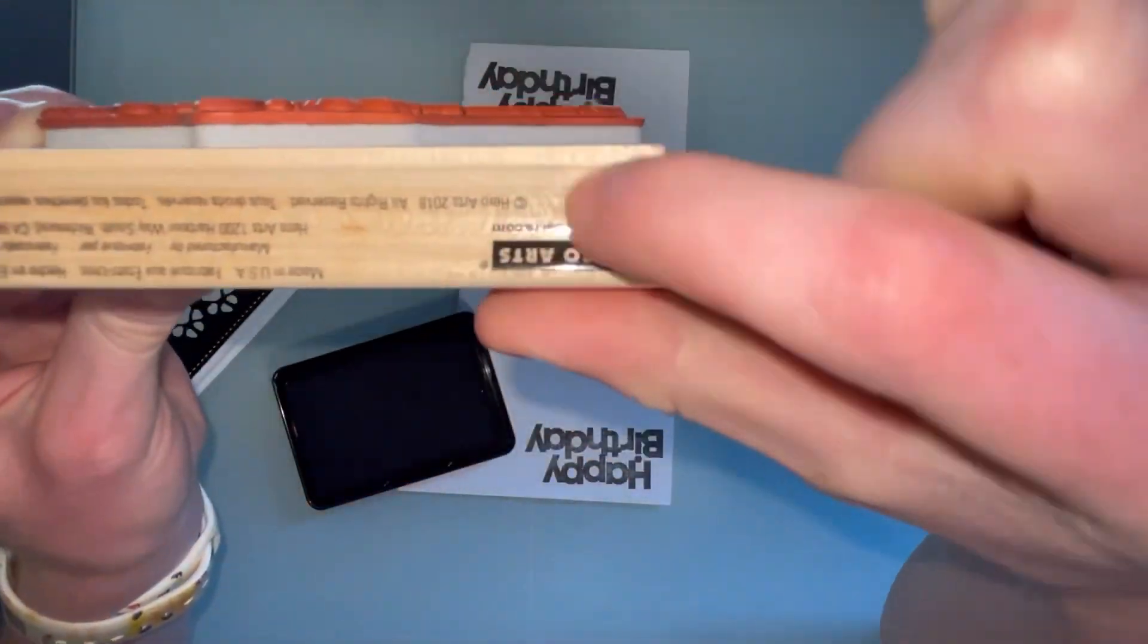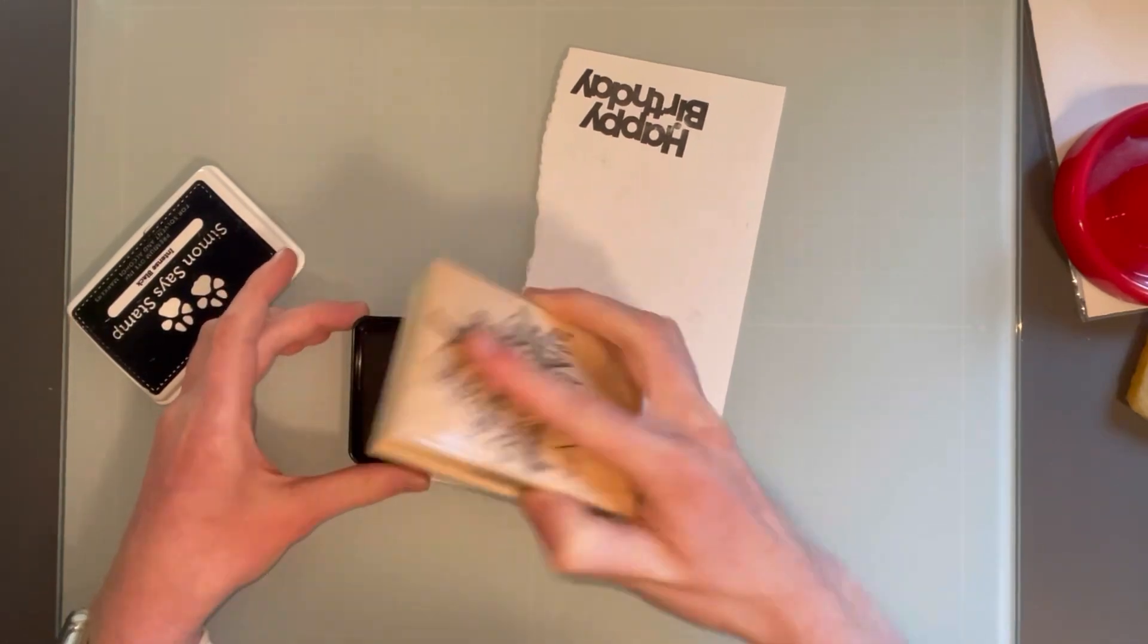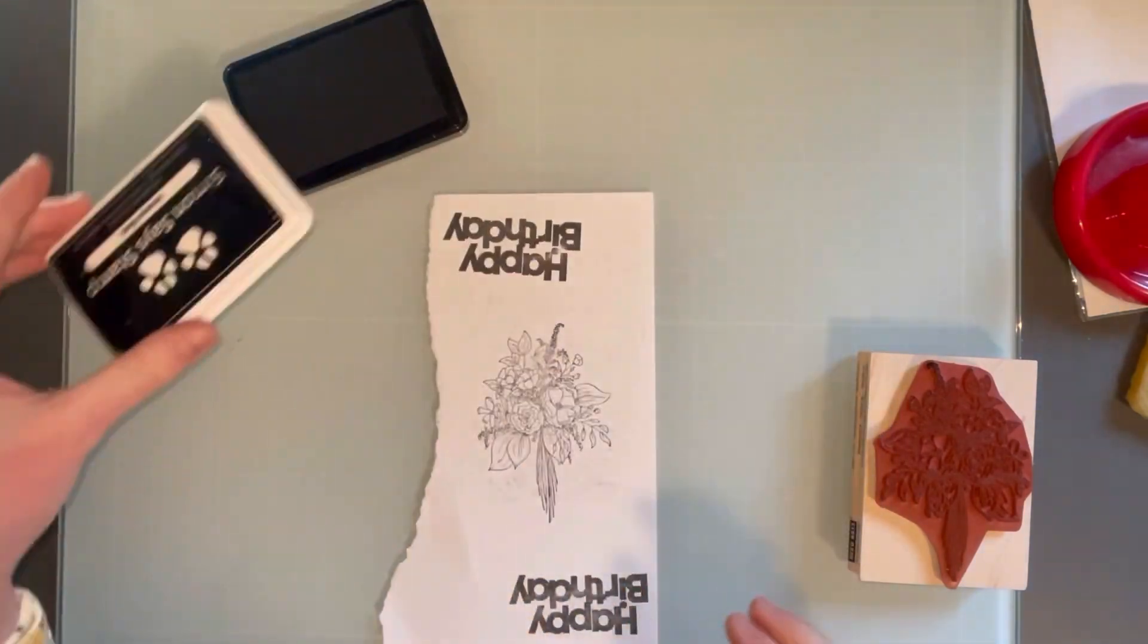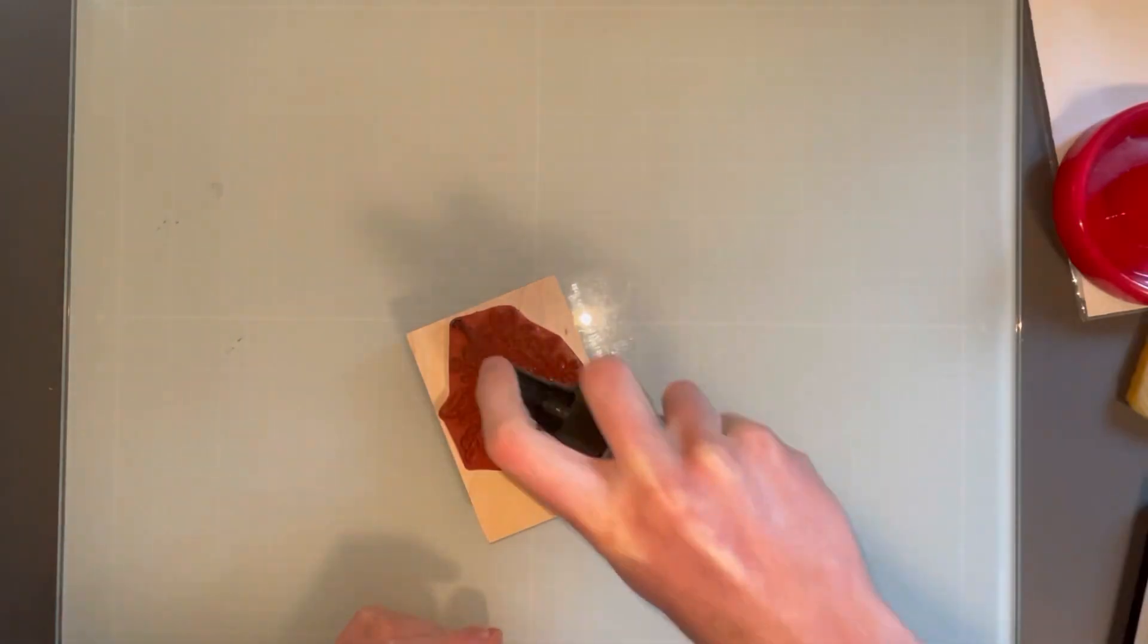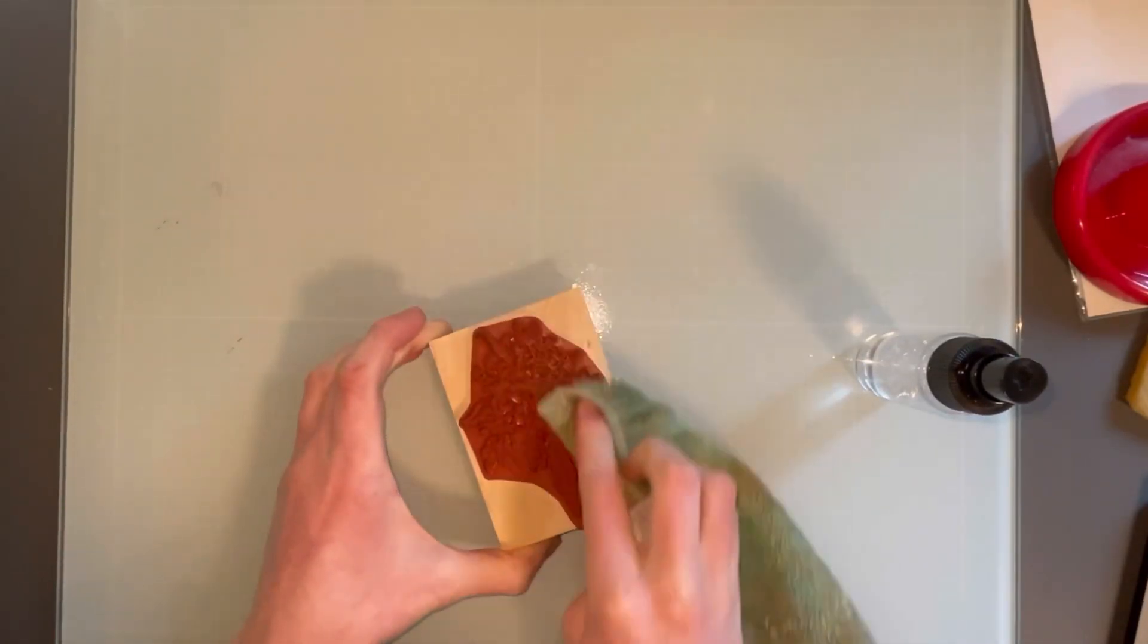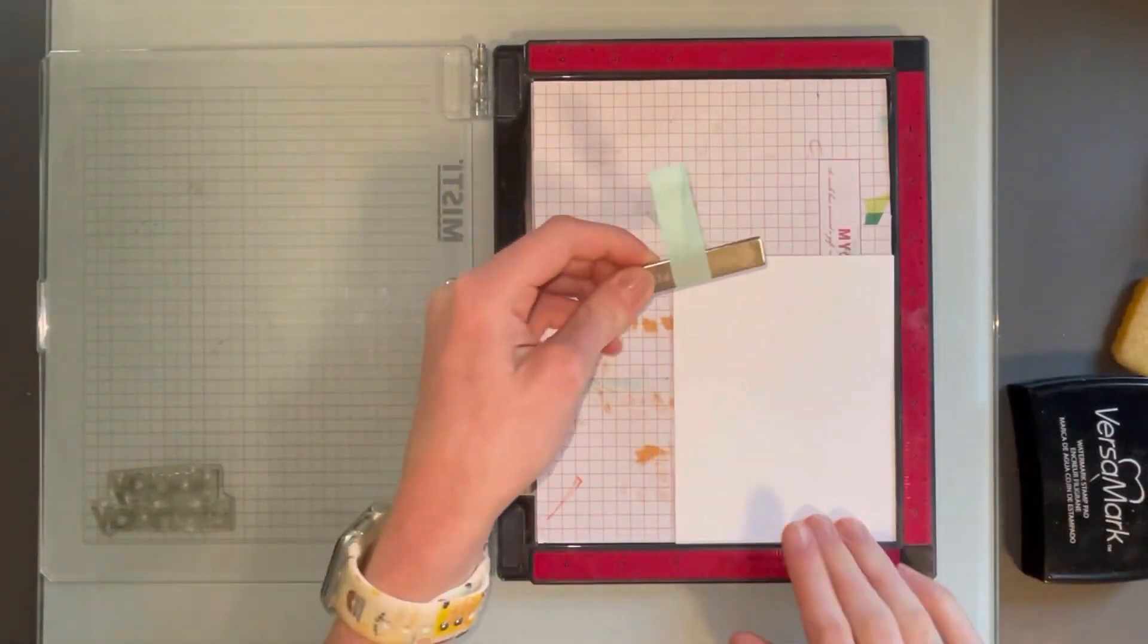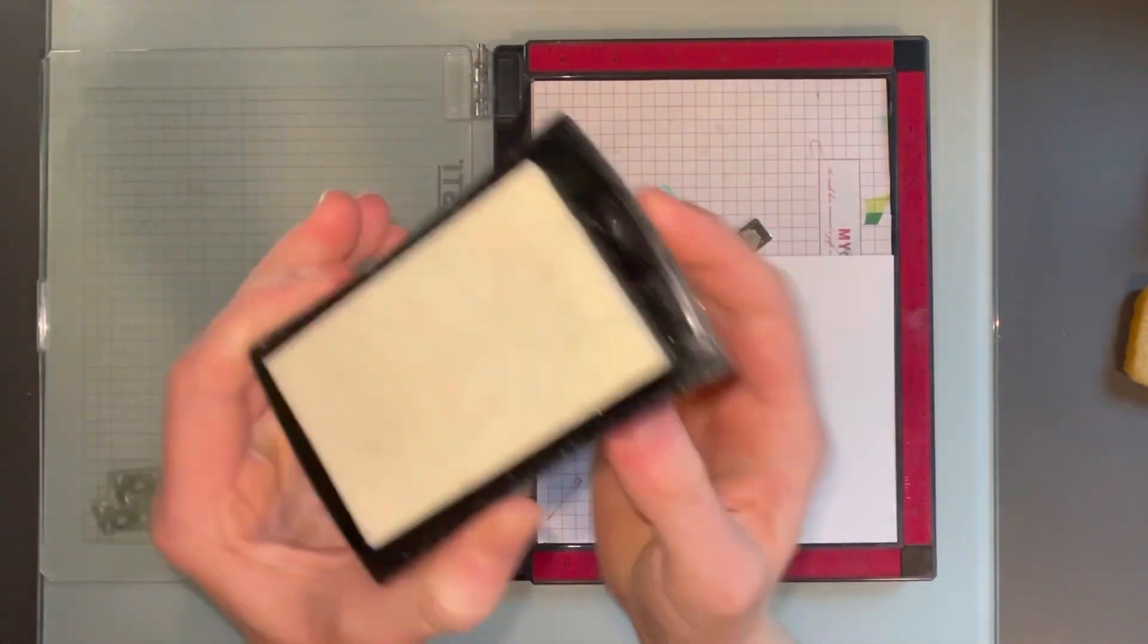Another option for stamping—there are more options than just the ones I'm showing you today—is a block stamp. This is very similar to the red rubber stamp. It comes with a foam and the red rubber part, and then it comes on a wooden block which helps you stamp. You don't need any stamp positioner or anything like that for this stamp. You just buy the stamp, which is another great and inexpensive option.